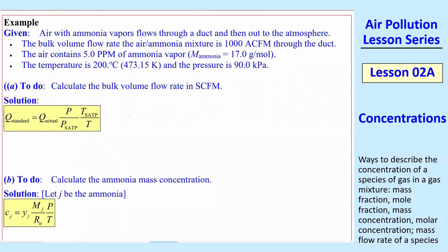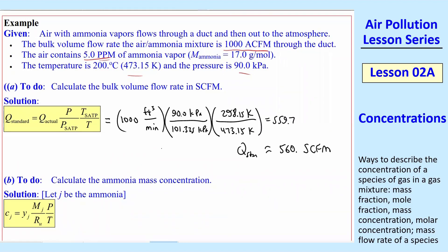Let's do an example. Air with ammonia vapor flows through a duct and out into the atmosphere. Given: bulk volume flow rate = 1,000 actual cubic feet per minute, mole fraction of ammonia = 5 ppm, molecular weight of ammonia = 17.0 g/mol, plus temperature and pressure. First, calculate the bulk volume flow rate in standard cubic feet per minute using q_standard = q_actual * (p/p_satp) * (T_satp/T). Plugging in values and units, the KPa and K units cancel, giving 560 standard cubic feet per minute.